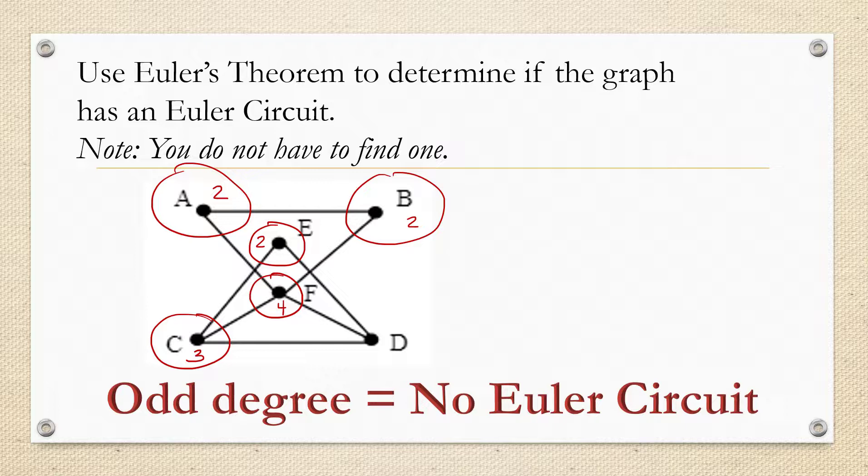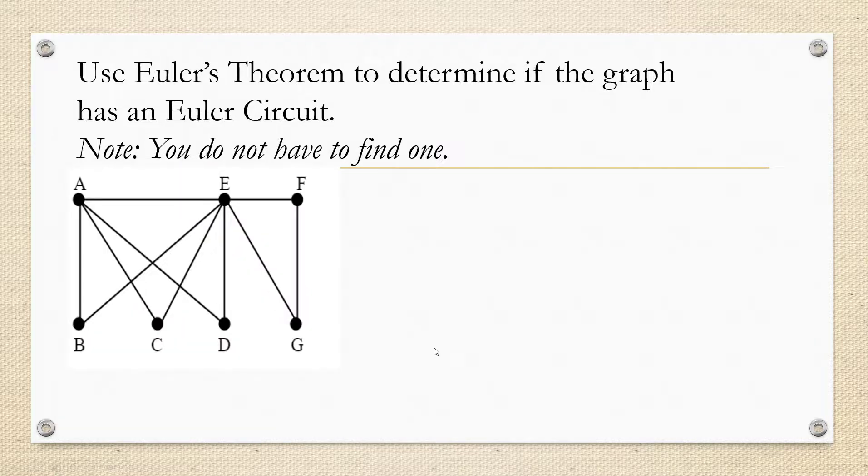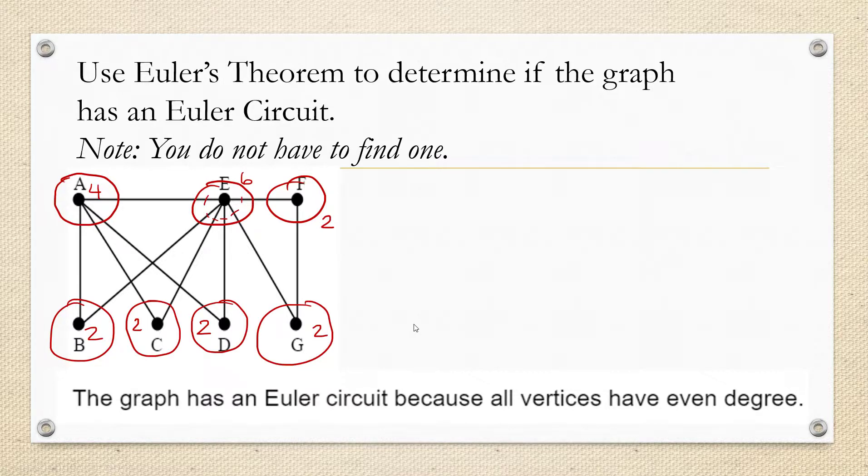All right, here's another one. Use Euler's theorem to determine if the graph has an Euler circuit. The graph has all vertices of even degree. We know it has an Euler circuit.